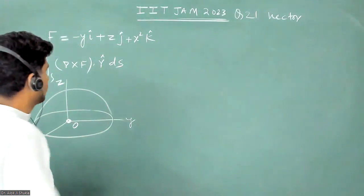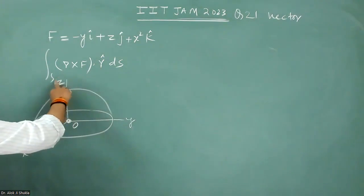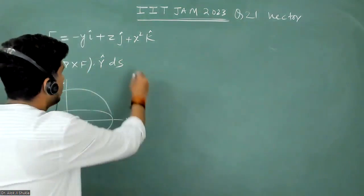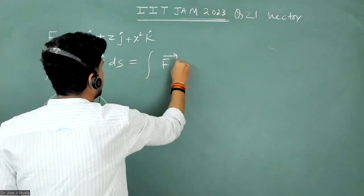This is a question from vector calculus and we have to calculate this quantity over the hemisphere. But what we will do, we will use Stokes' theorem and write it as F dot